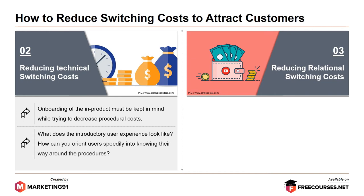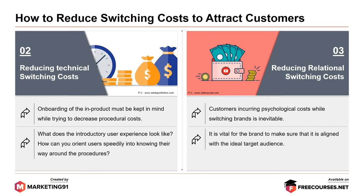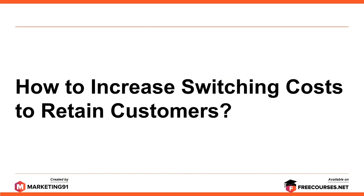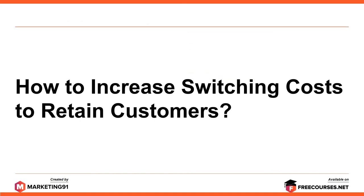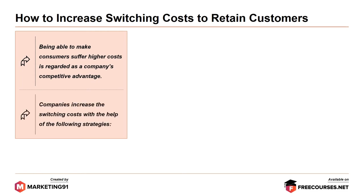Third, reducing relational switching cost. Customers incurring psychological cost for structural brands is inevitable. It is vital for the brand to make sure that it is aligned with the ideal target audience. How to increase switching cost to retain customers? Being able to make consumers suffer higher cost is regarded as a company's competitive advantage. Companies increase switching cost with the help of the following strategies.